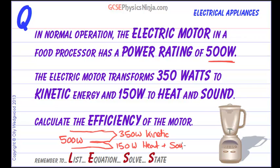The question you need to answer before we start the calculation is: which one is the useful energy or the useful power? And it must be the kinetic energy, because that's what's chopping up the vegetables — so that is useful.